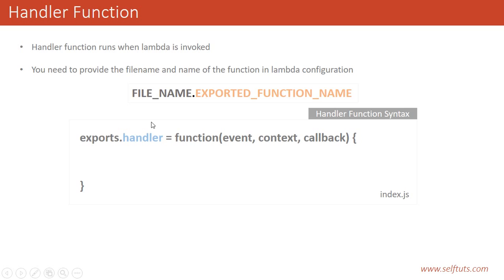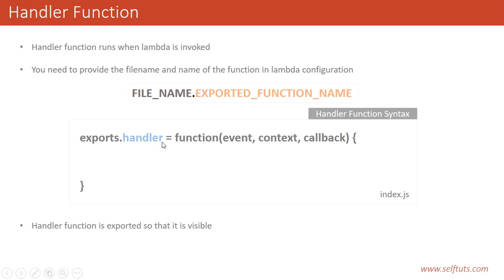For now, you have to understand that to specify the name of the function, you have to use the file name and the exported function name. So if we are using this lambda function in our AWS Lambda, the name of the file is index.js and the name of the function is handler. While doing the configuration, you provide the syntax as index.handler. The handler function is exported so that it is visible to the external world and can be interacted with. We are specifying in our configuration that our handler function is index.handler.